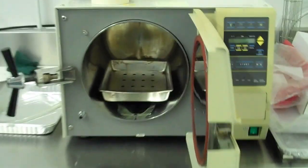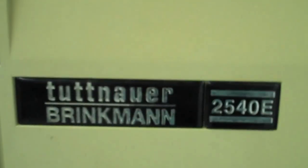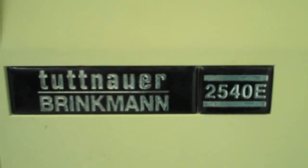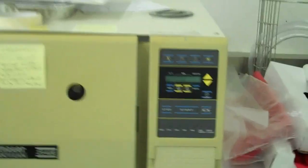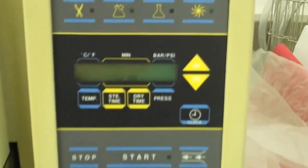Okay, this is the Tuttenauer Brinkman 2540E. This is an autoclave you use to sterilize things. There is a control panel and at the bottom there's a power switch.